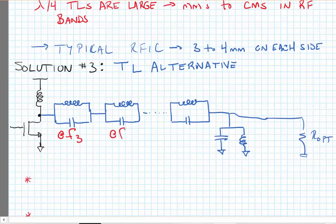For instance, we'll make this one resonant at f3, this one will be resonant at f5, this one will be resonant at f(2n+1). And the shunt network that we've drawn here will be resonant at f sub f0, the fundamental frequency.